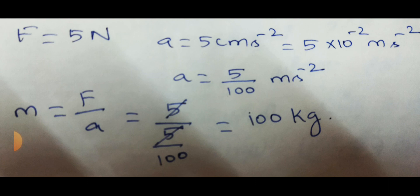So mass is as usual, very easy formula. Mass M is equal to F by A. So 5 divided by 5 by 100. 5 cancel. The 100 becomes in the numerator. So answer is 100 kilogram.